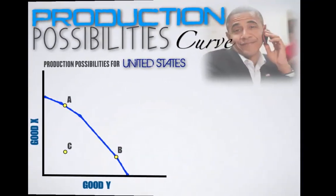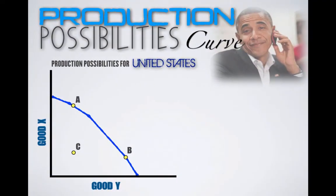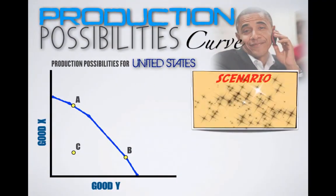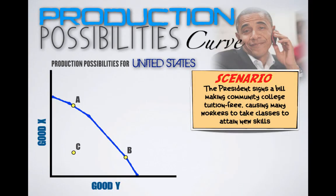In our next example, a production possibilities curve is provided for the United States. Let's say the President signs a bill making community college tuition-free, causing many workers to take classes to attain new skills. With cheaper education, a larger percentage of the workforce will now be able to attain new skills and become more productive. With a more productive workforce, the United States is going to be able to produce more goods and services and therefore will see an increase in its capacity to produce, meaning that its PPC will shift outward.